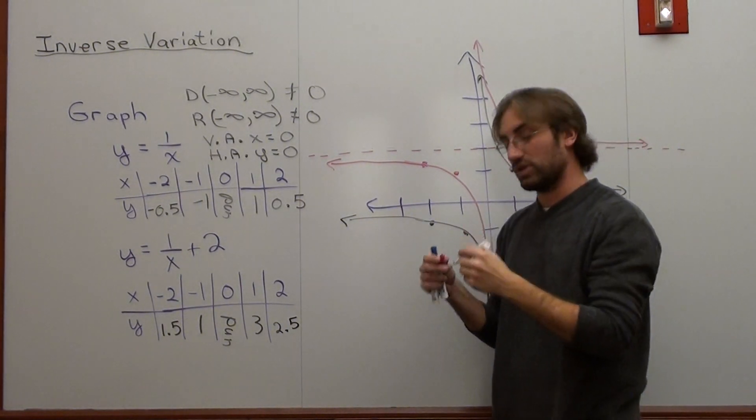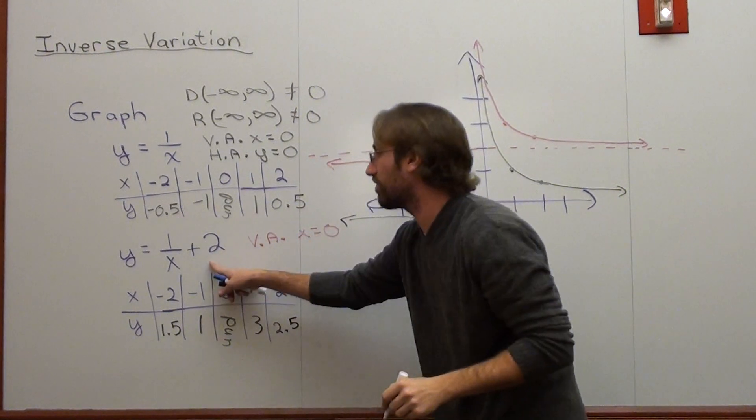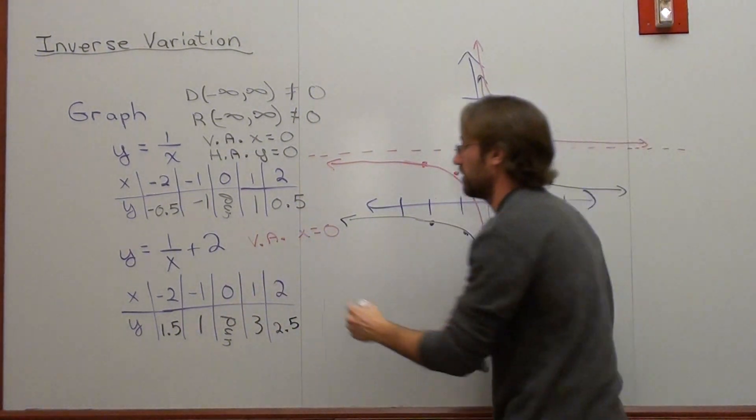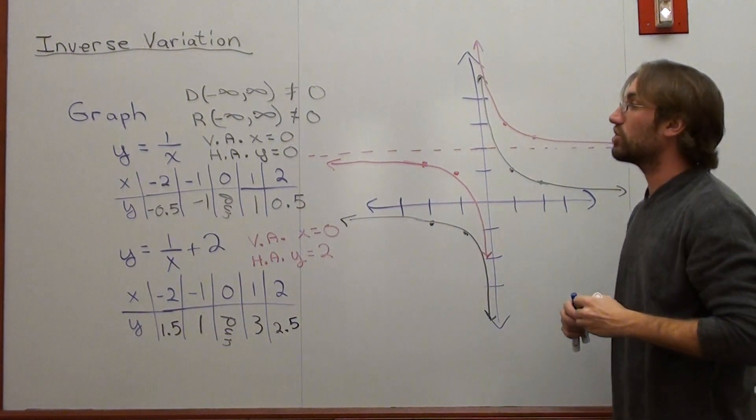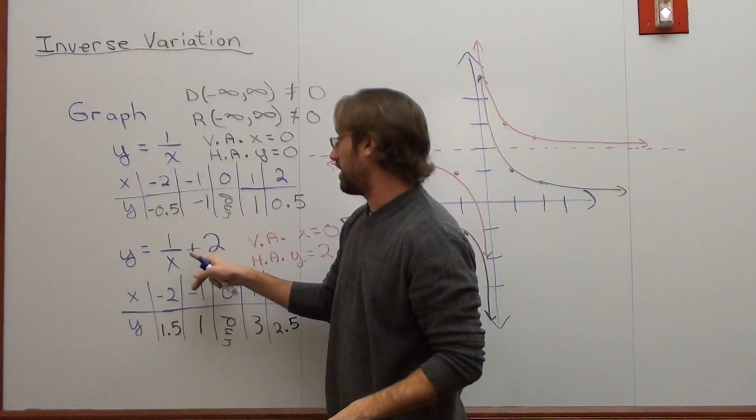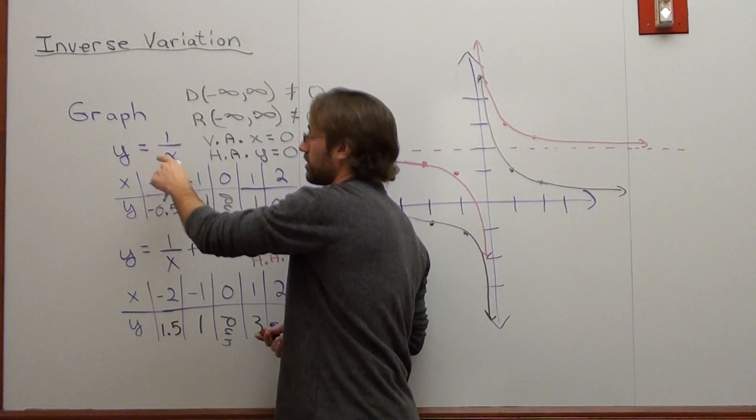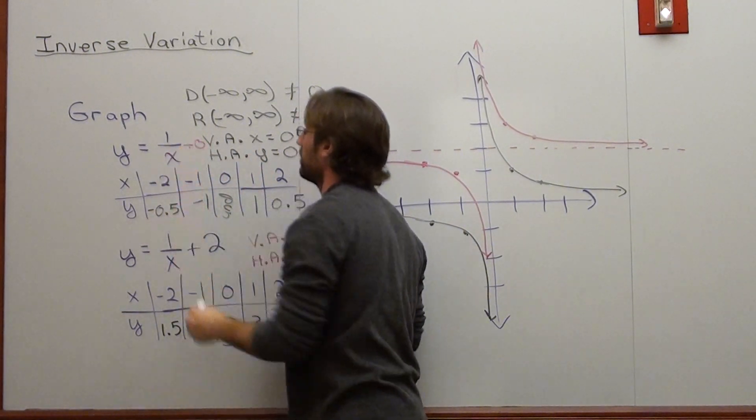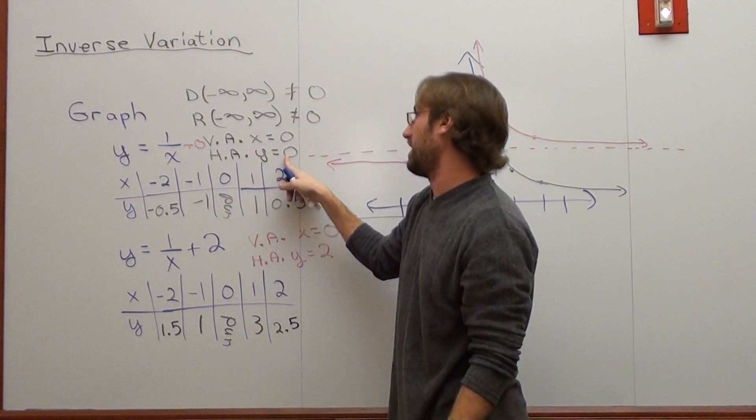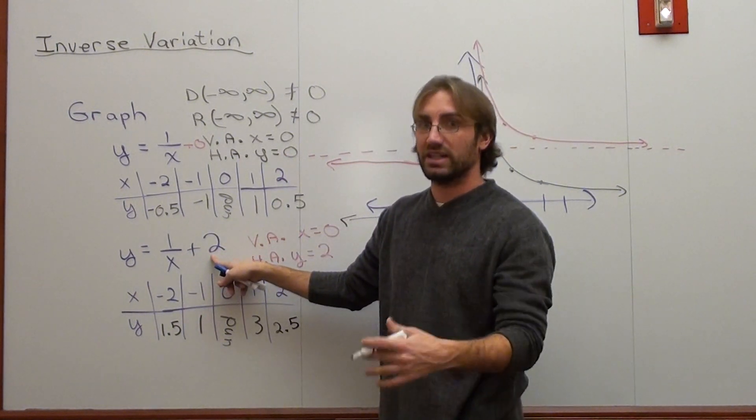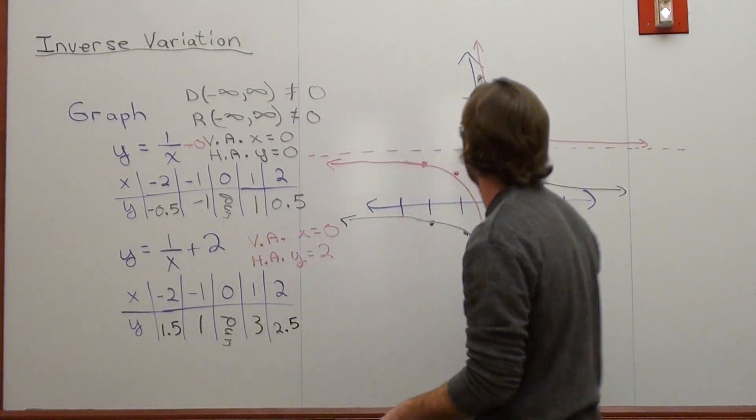So what happens is the vertical asymptote is still at x equals 0 for this graph. But the horizontal asymptote is at y equals 2. Now, there is a direct correlation between the plus 2 and the horizontal asymptote. See, whether or not you want to admit it, this graph is y equals 1 over x plus 0. The horizontal asymptote is whatever you're adding to the 1 over x. And in this case, since you're not adding anything, the horizontal asymptote is 0. 1 over x plus 2, the horizontal asymptote is just that, 2. That's not by chance. That is, in fact, what happens. So it's really cool.